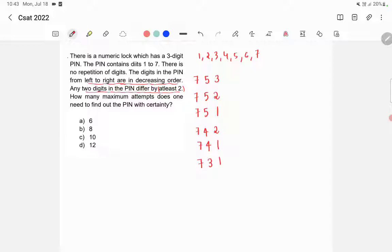Now 6, 4, 2 is a possibility. 6, 4, 1 is a possibility. 6, 3, 1 is a possibility. Now we have 5, 3, 1 is a possibility. So these are all the possibilities.